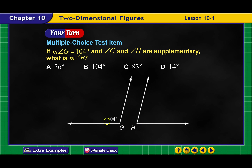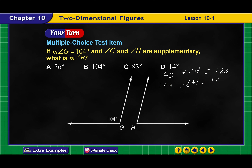If angle G and angle H are supplementary — remember, supplementary means they equal 180 — then angle G plus angle H equals 180. We know angle G is 104, so 104 plus angle H equals 180. Subtracting 104 from both sides, we get the measure of angle H equals 76 degrees.